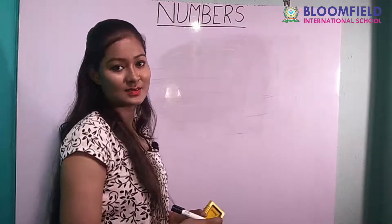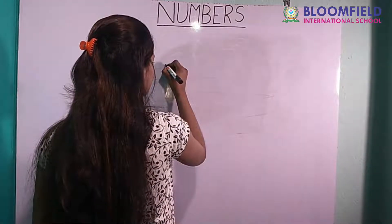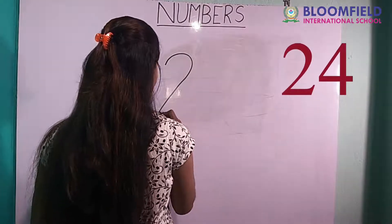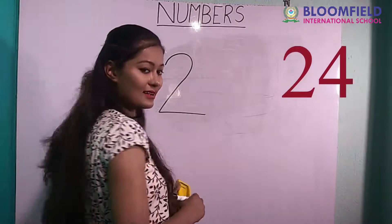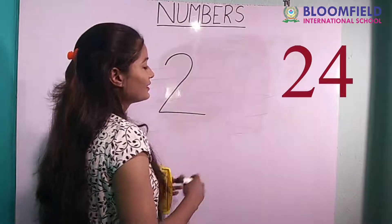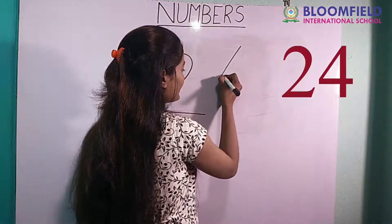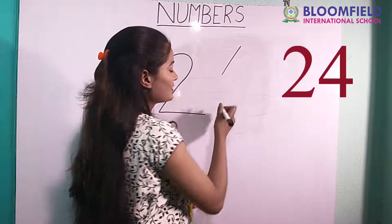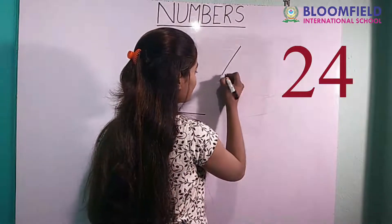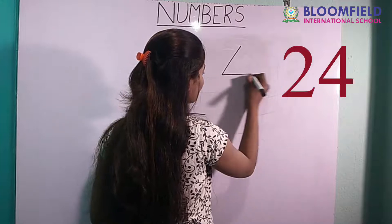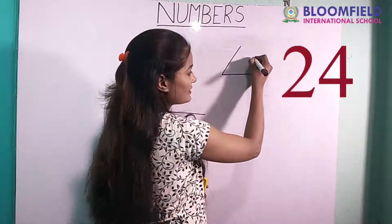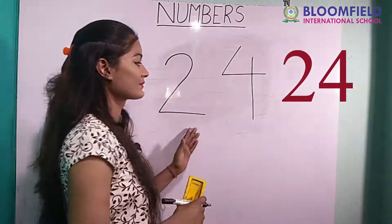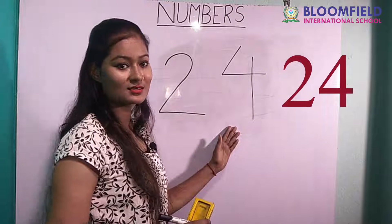Next: a curve, then slipping line. Slanting line, slanting line, slanting line. Slanting line, sleeping line. Then good — standing line. Two four. Twenty four.